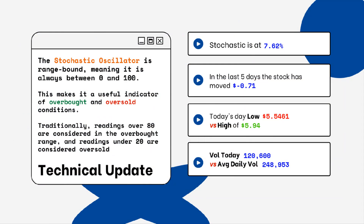You want to look for overbought and oversold conditions. Readings over 80% are considered overbought, and readings below 20% are considered oversold. You want to be aware of this when you're looking at a particular stock.